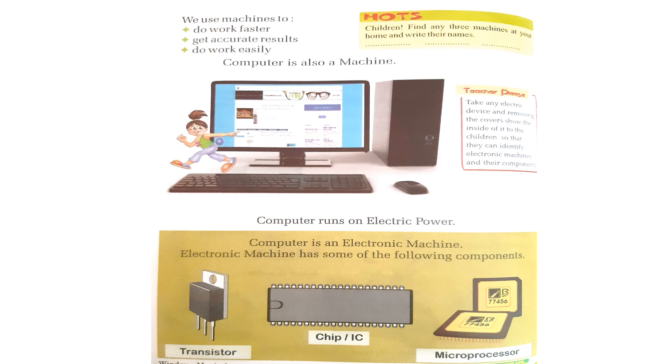We saw different machines run with the help of different power. Same way, computer runs with the help of electric power. Computer is an electronic machine. Electronic machine has some of the following components. So, computer is an electronic machine working with the help of electric power.